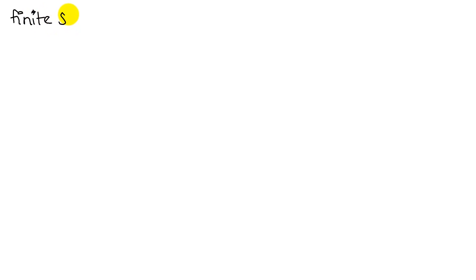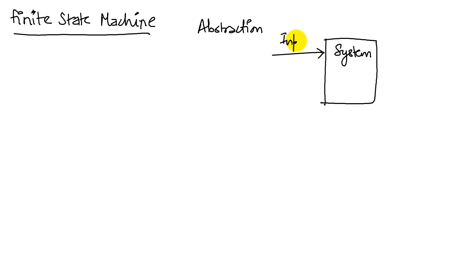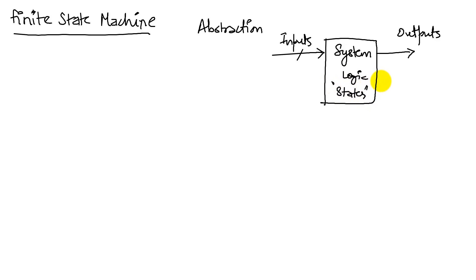In this video, we will look at finite state machines. A finite state machine is an abstraction we use to describe any system that can be captured by this semantic: it takes inputs, there could be multiple inputs, and it generates outputs. It performs certain logic, and this logic puts the system in different states. So it reacts to the inputs, changes states, and produces outputs. Any system that can be described like this is described by a finite state machine.